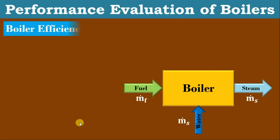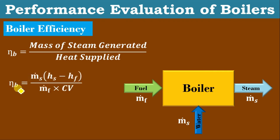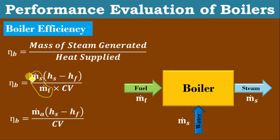In the direct method, that is mass of steam generated divided by fuel supply. The mass of steam generated is nothing but the enthalpy difference multiplied by the mass of water supplied. Divided by heat supplied, which is calorific value multiplied by mass of fuel used. So, efficiency of the boiler is equal to: mass of steam generated (water supplied) × (Hs − Hf), divided by heat supplied Mf × Cv. This equation can be written as: efficiency of boiler = M_dot_A × (Hs − Hf) / Cv.